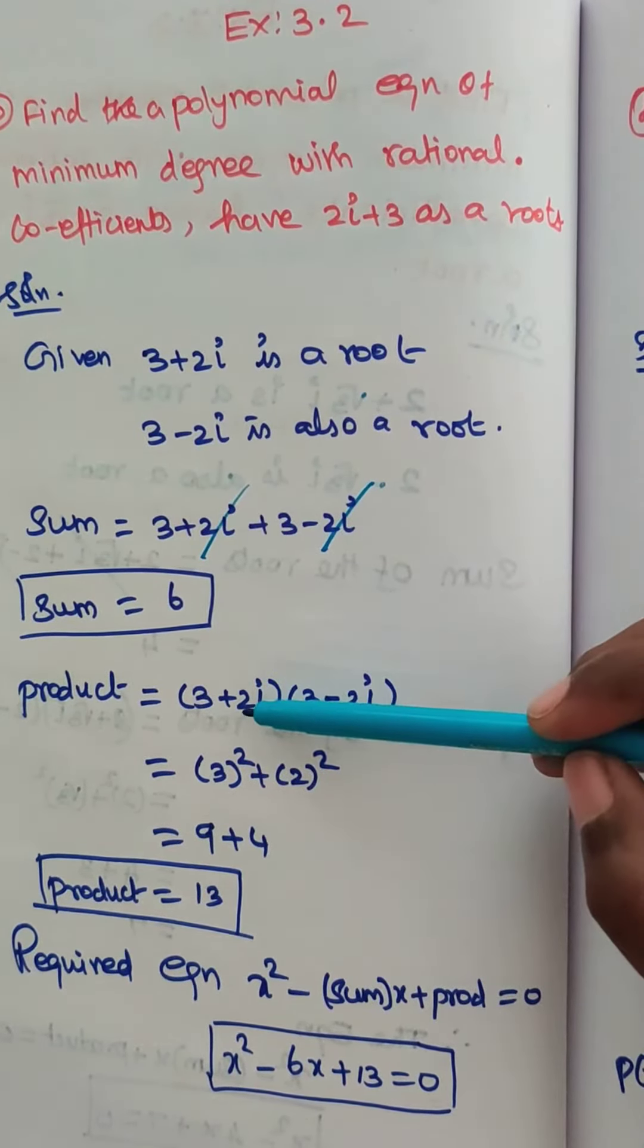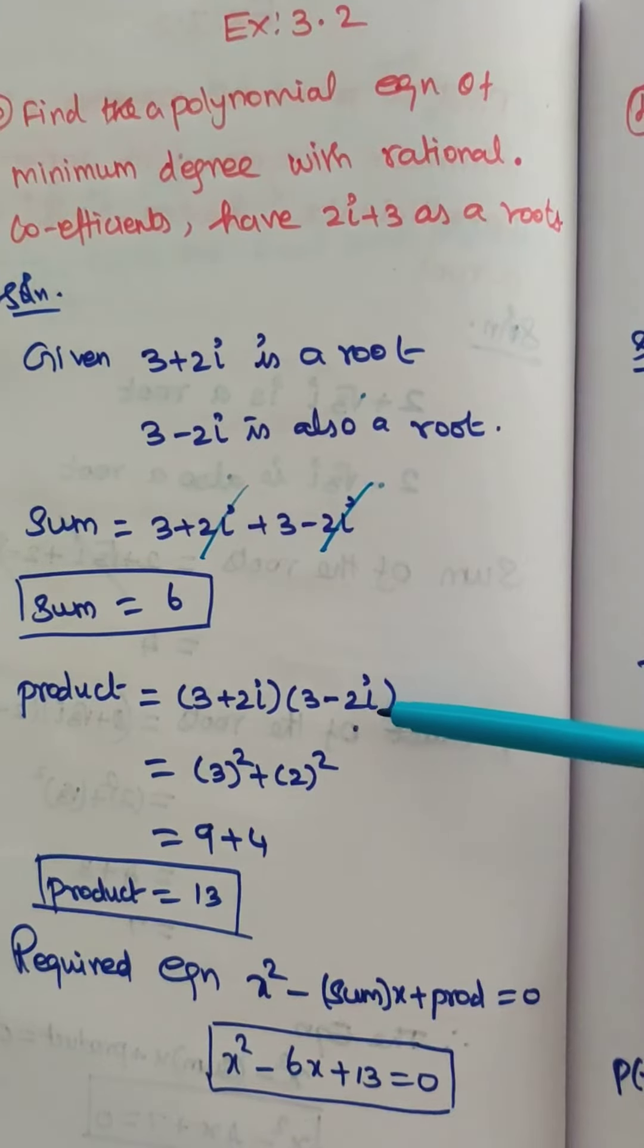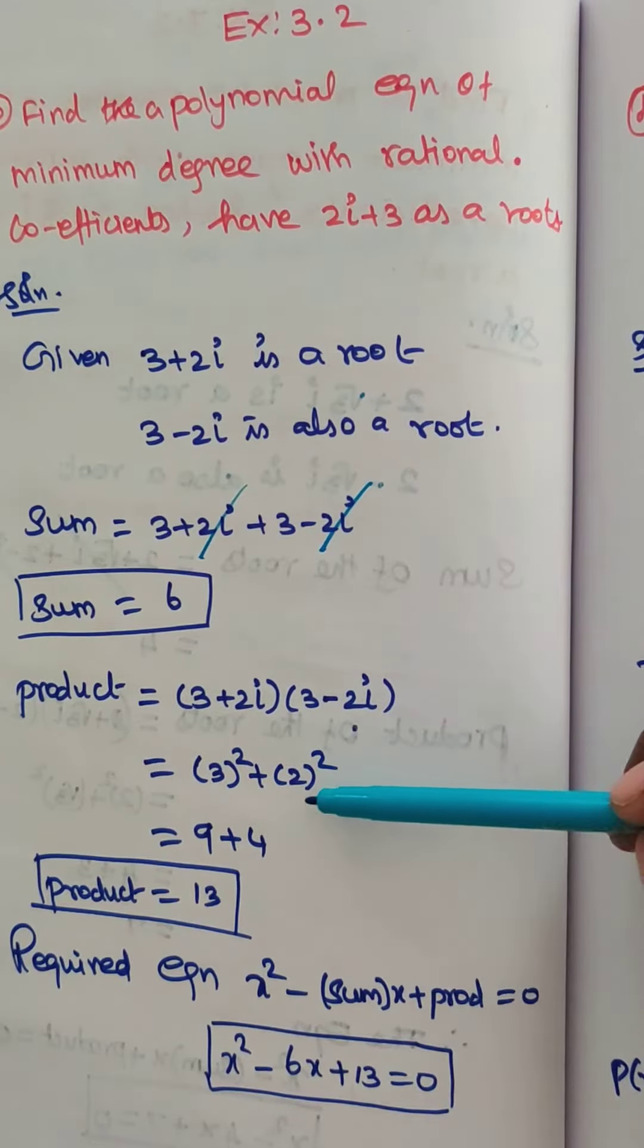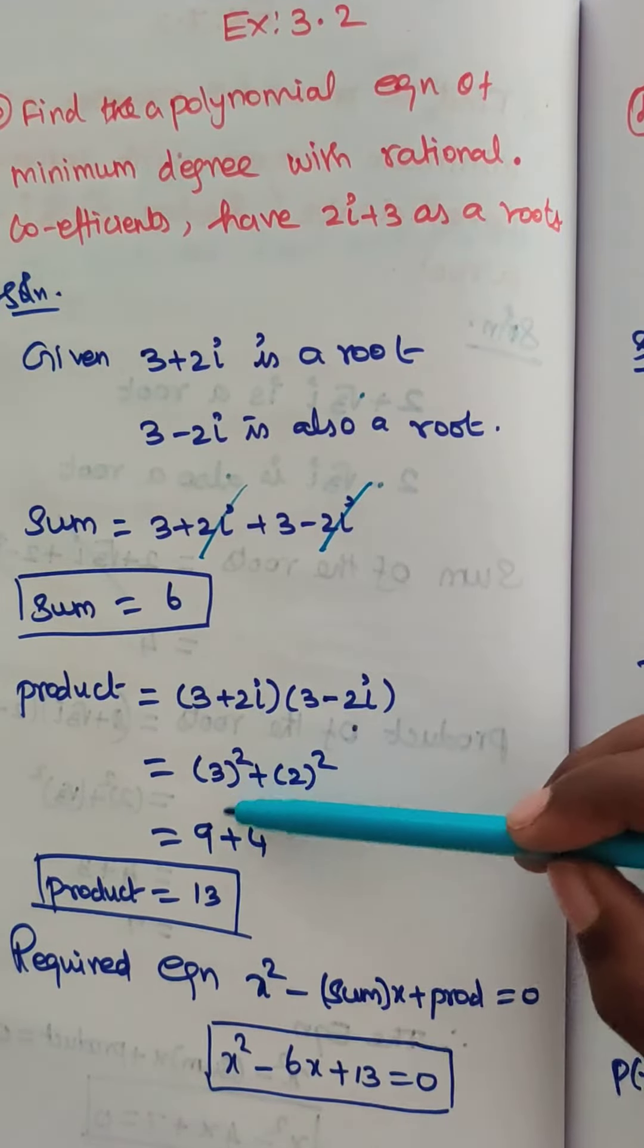Product of roots: 3 plus 2i into 3 minus 2i. Using the formula a plus ib into a minus ib, that is equal to a square plus b square. So 3 square plus 2 square equals 9 plus 4, which equals 13.